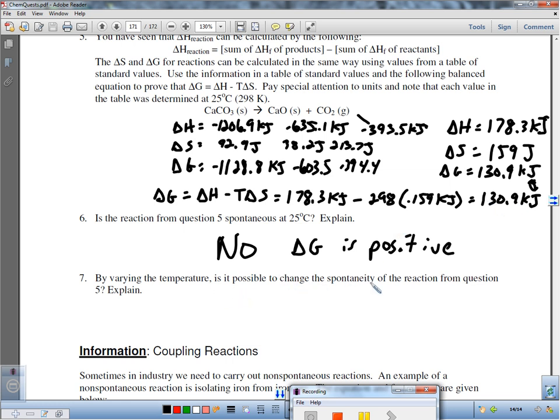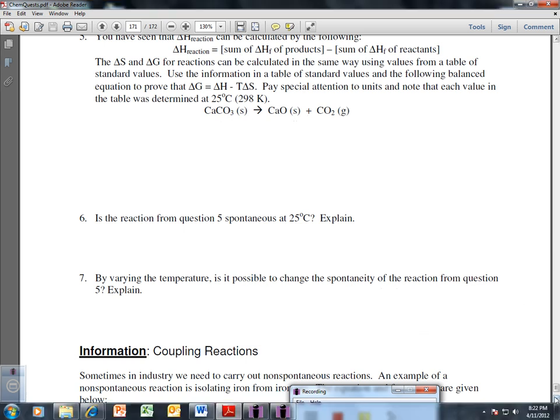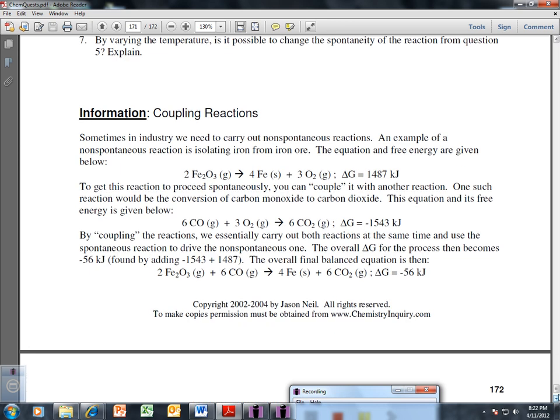By varying the temperature, is it possible to change the spontaneity? Yes, it is, because if its temperature goes way up from 298 up to a much bigger number, well, at some point, this value is going to be negative enough to make this final delta G negative. So yes, if temperature goes way up enough, delta G will be negative. So that would make it spontaneous. So temperature can have a big effect on spontaneity.